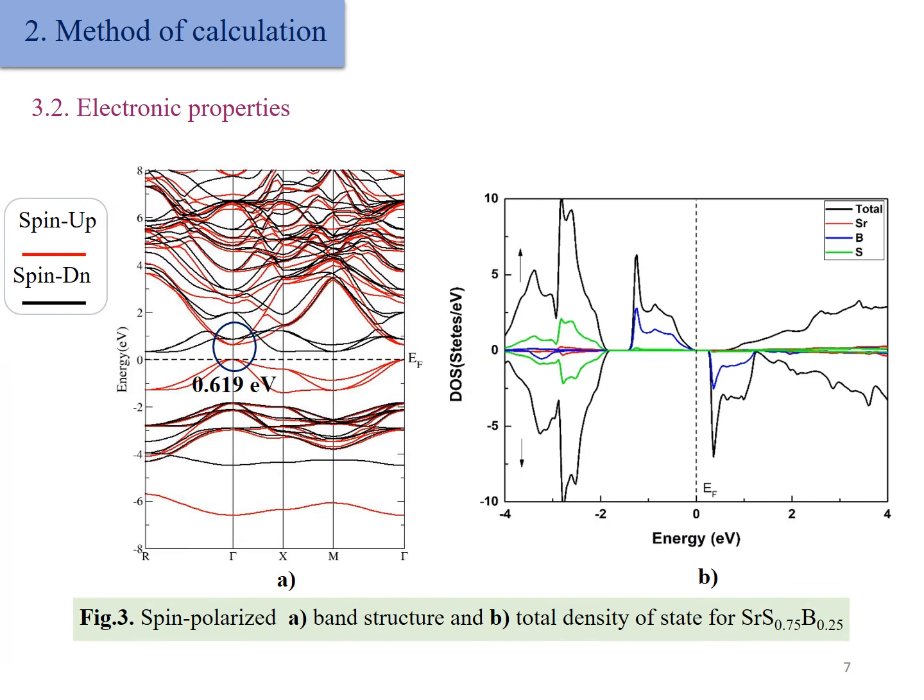The electronic properties: Figure 3 illustrates the spin-polarized band structure and total density of states of our compound. From Figure A, we can see that doping the boron element in the SrS host matrix generates a magnetic semiconductor with the majority spin being a direct band gap of 0.6090 eV.